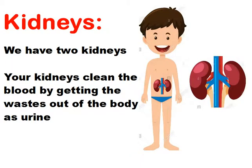Number four: the kidneys. We also have two kidneys in our bodies that exist in the back. The kidneys act like filters that clean the blood from any waste and send them outside the body in the form of urine.